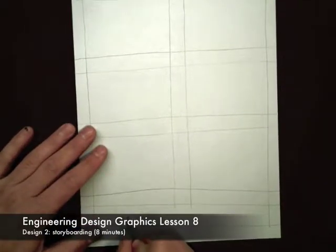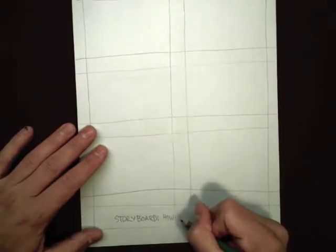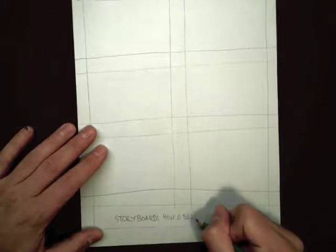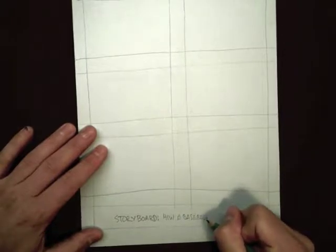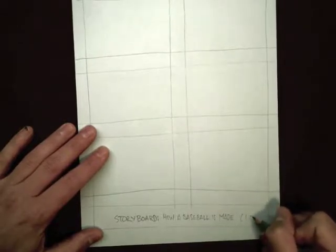Hello and welcome to Engineering Design Graphics lesson 8. Today we are looking at storyboarding, a technique we use in design drawing to show narrative sequences and describe things that we have trouble describing with a single orthographic or isometric view.